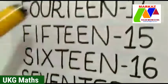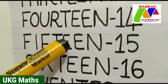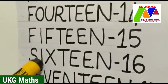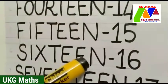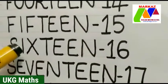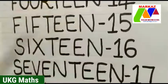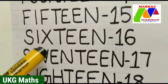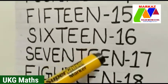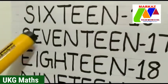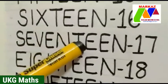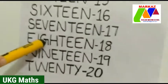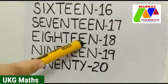Next number 15. F-I-F-T-E-E-N, 15. Next number 16. S-I-X-T-E-E-N, 16. Next number 17. What is the spelling of 17? S-E-V-E-N-T-E-E-N, 17. Next number 18. E-I-G-H-T-E-E-N, 18.